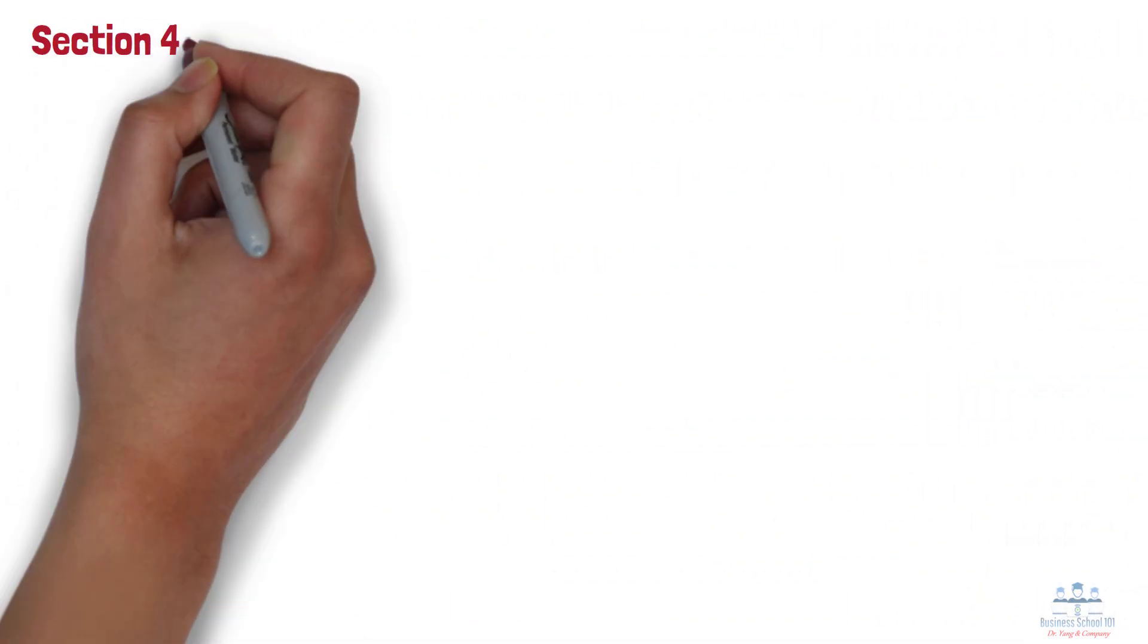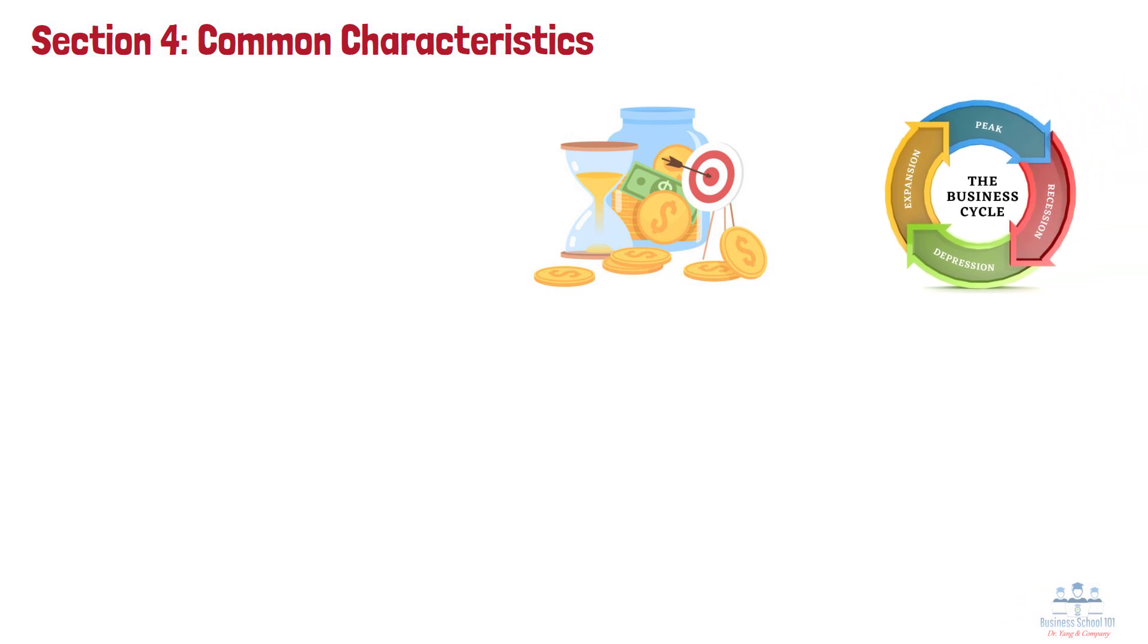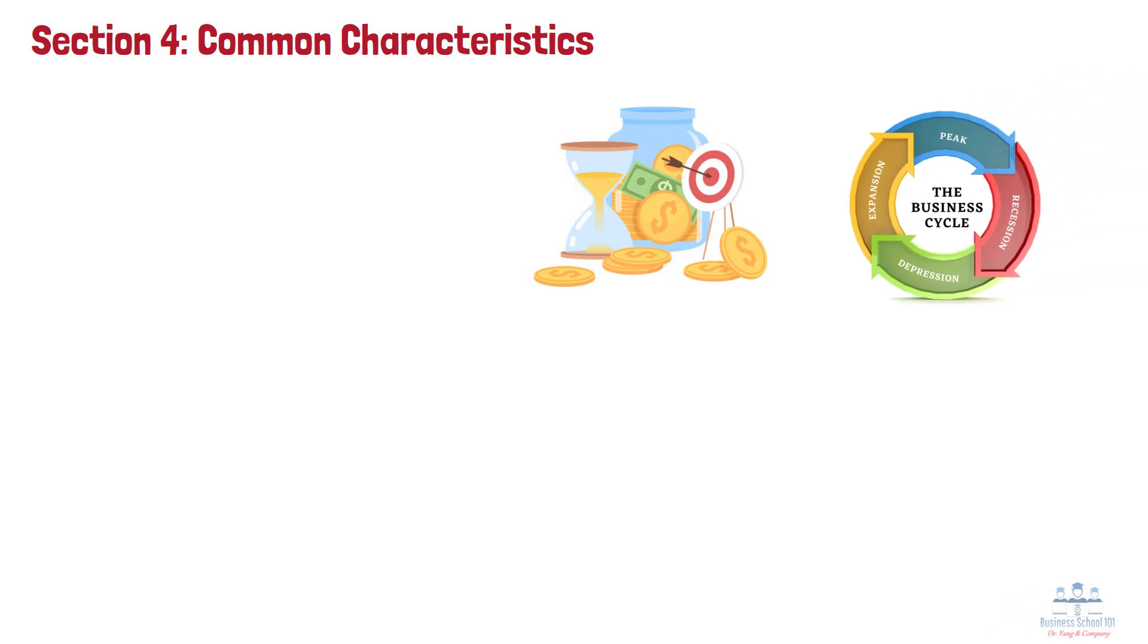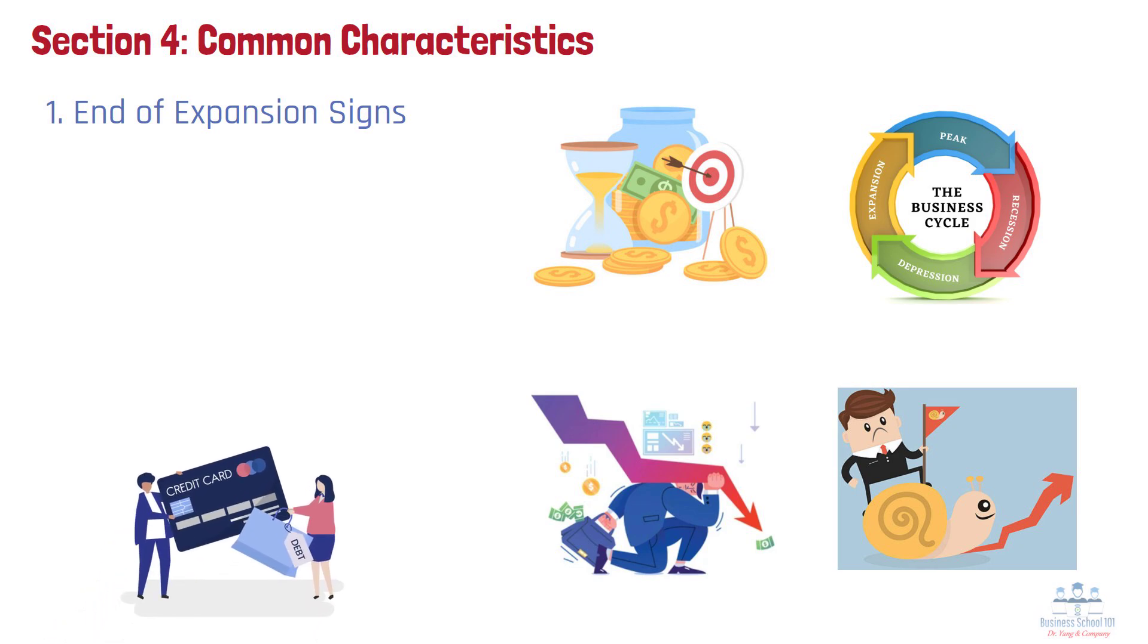Section 4: Common Characteristics. Each business cycle is different. The lengths of the expansion and recession phases and the sectors of the economy that are most affected are rarely the same in any two cycles. But most business cycles share the following characteristics. Number 1: End of Expansion Signs. At the end of an economic expansion, there are usually some clear signs that things are slowing down. Interest rates go up, wages rise faster than prices, and that puts pressure on company profits. On top of that, households and businesses often rack up a lot of debt during the good times to finance their spending. Eventually, all that debt starts to weigh on them, and they begin cutting back, which can set the stage for a downturn.